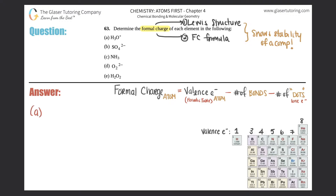For part A, you can pause the video and try to draw your own Lewis structure. I'm going to assume you know how to draw Lewis structures since we're past that stage in the textbook. For H₃O⁺, you should have an oxygen in the middle surrounded by three hydrogens and one lone pair on the oxygen. Since there is a charge, you bracket it and put a plus at the top — that's the correct Lewis structure.